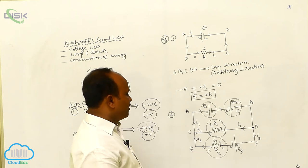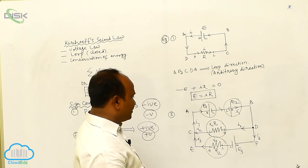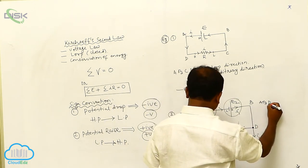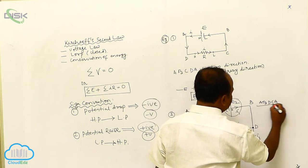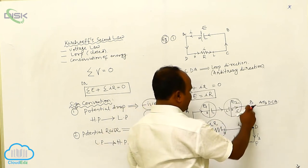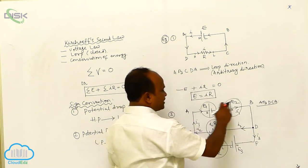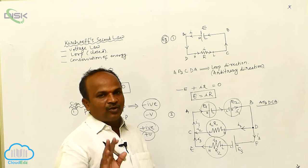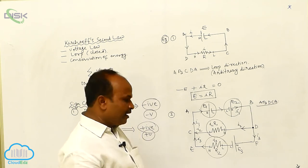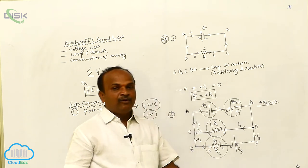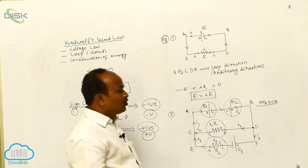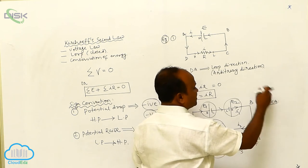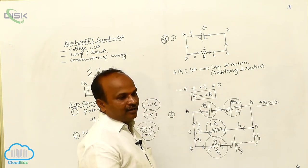Now choose any one of the loops. Let us consider loop A-B-D-C-A. This is called the arbitrary direction. While moving through the arbitrary direction, don't consider the current direction — we may go in the direction of current or opposite to it. The initial point must coincide with the final point, forming a closed loop.